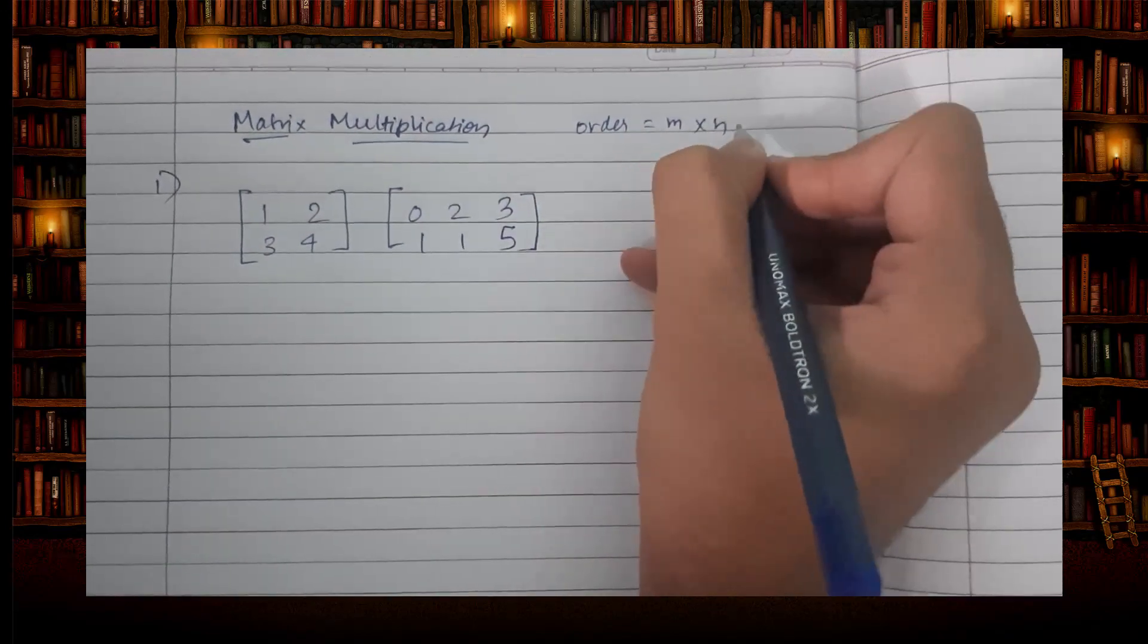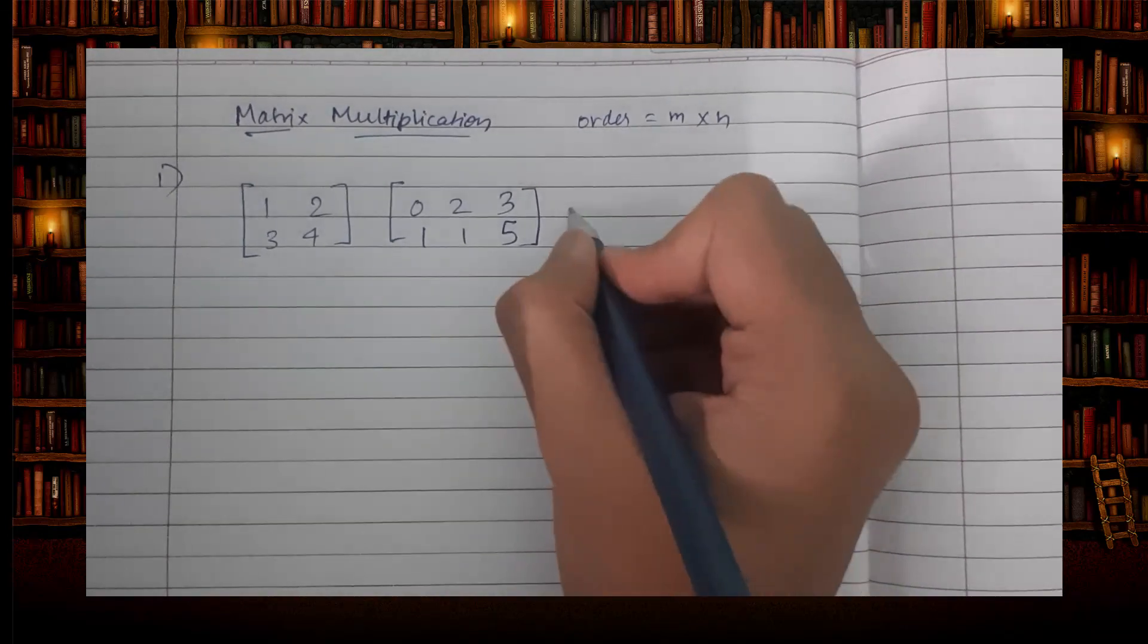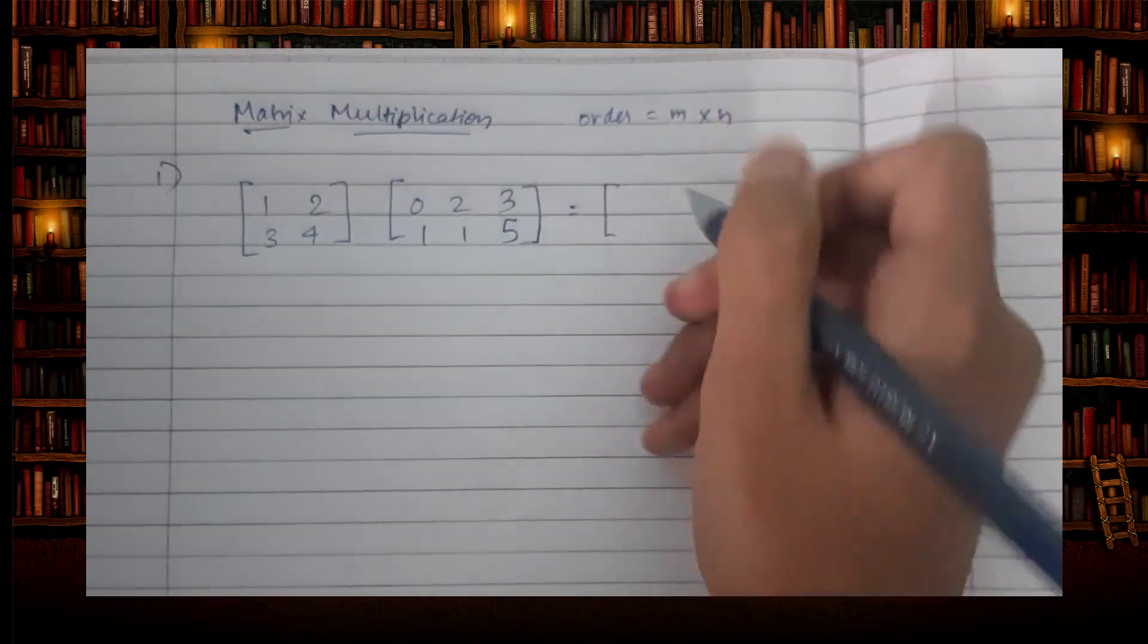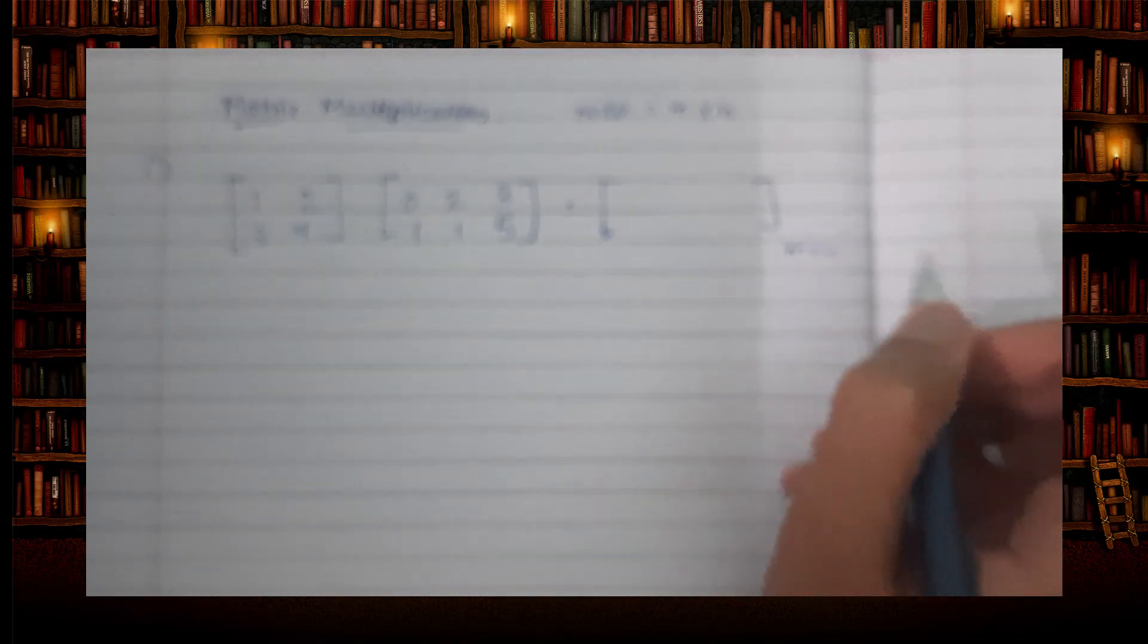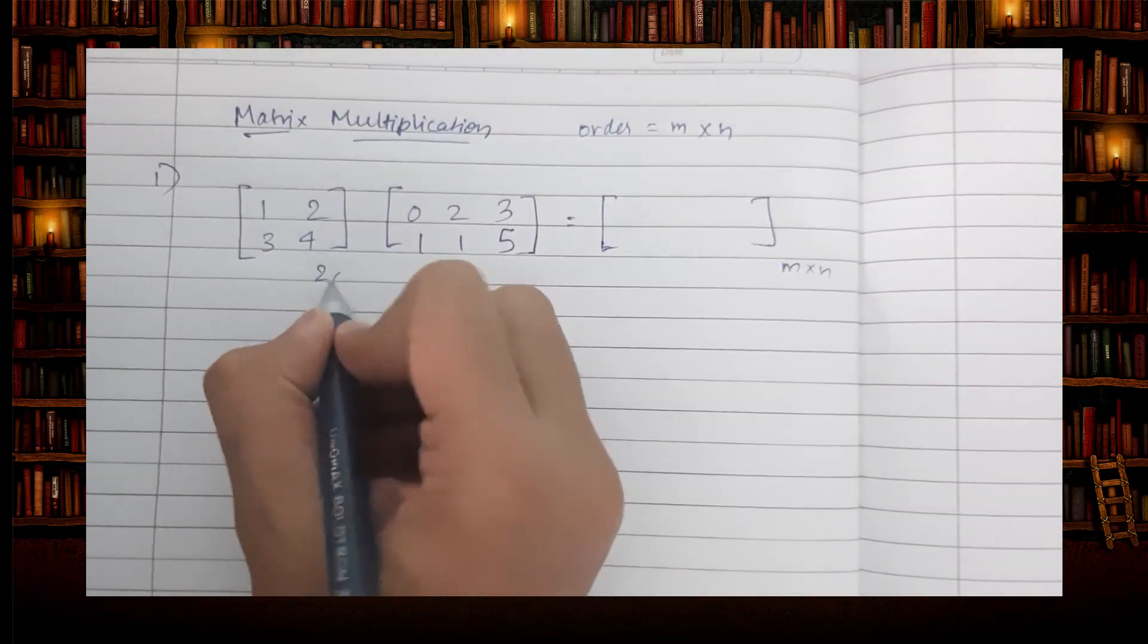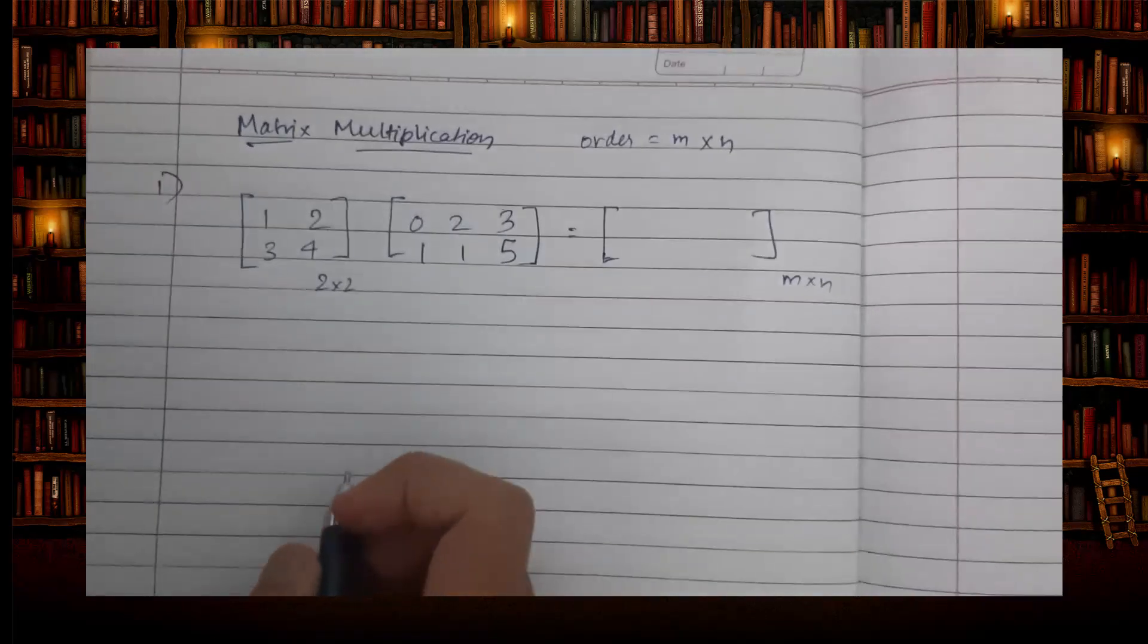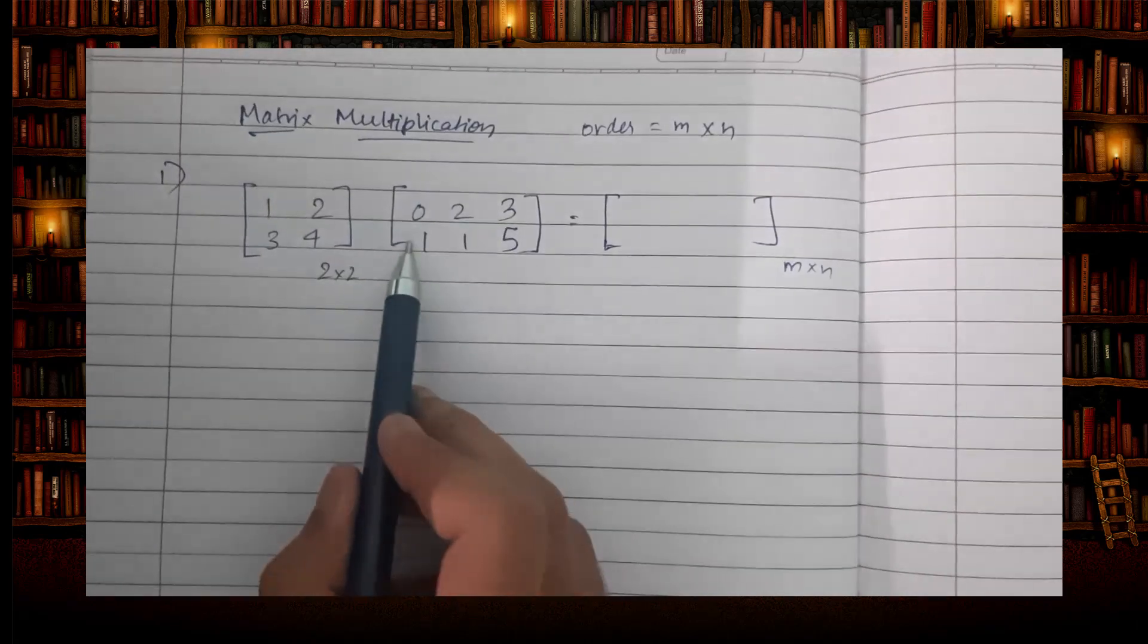The order is in the form of m into n, so the answer for this matrix multiplication will also be in the form of m into n. Let's find it out. These are 2 by 2 matrices, two rows and two columns. For this one, it has three columns, and two rows, so it's 2 into 3.